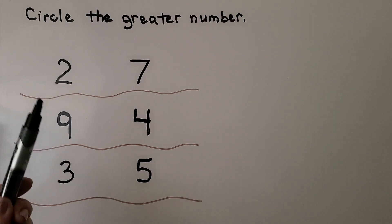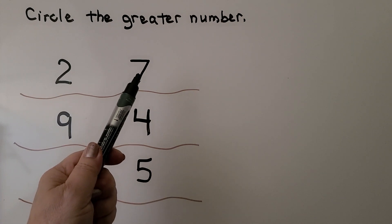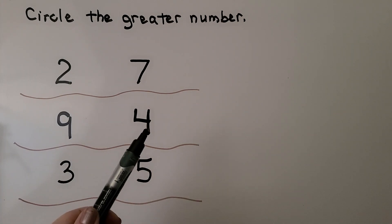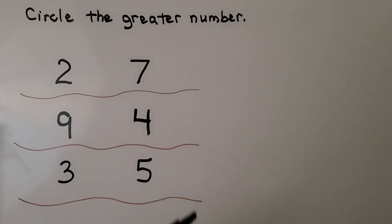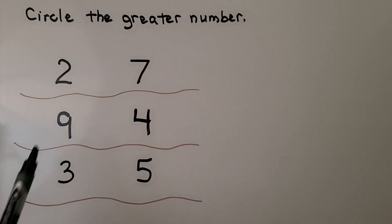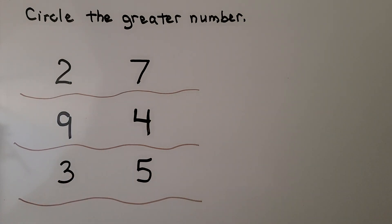Here we have a pair of numbers: two and seven. We have another pair: nine and four. We have another pair: three and five. We need to circle the greater number in each pair. In the pair two and seven, which is the greater number?